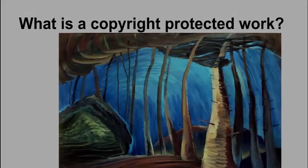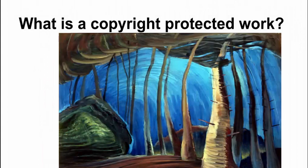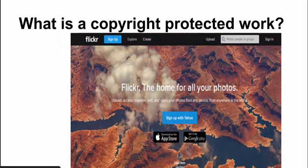So you might be wondering, what is a copyright protected work? Well, artistic creations such as drawings, engravings, paintings, and photographs — like our example here of a painting by Emily Carr. Computer digital material, like clip art, computer programs, databases, emails, blogs, wikis, and websites — like our example of the Flickr website.